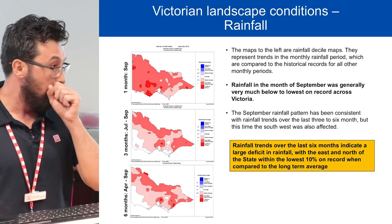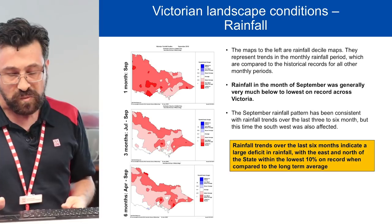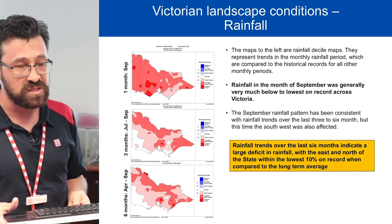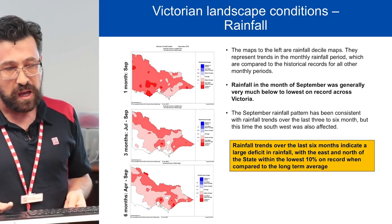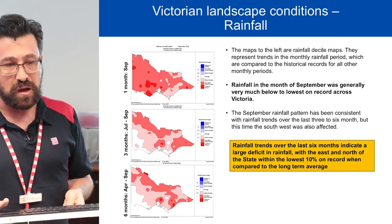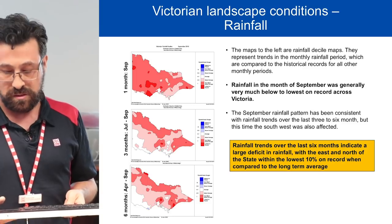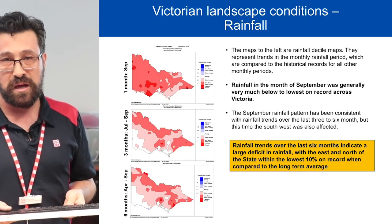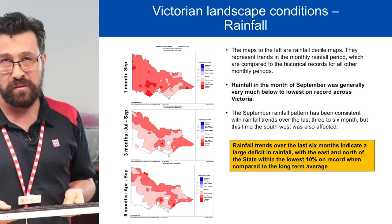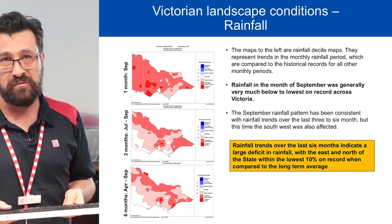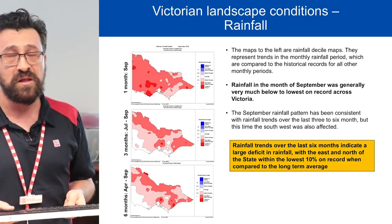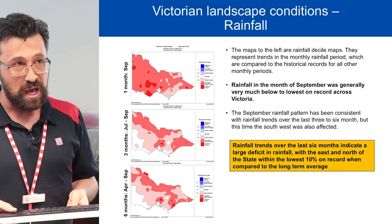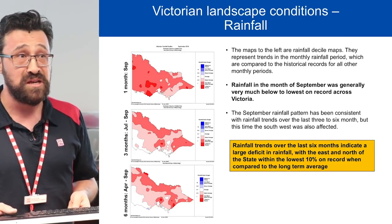The diagram also shows that September was the second lowest month of rainfall over the last 100 years, which is quite significant.